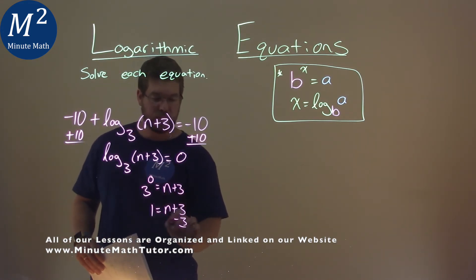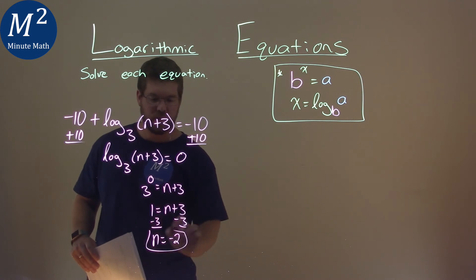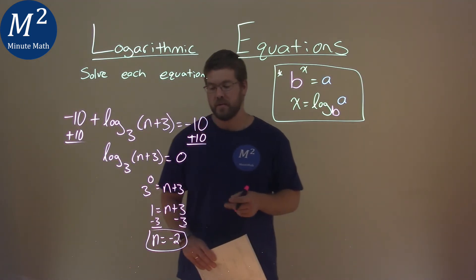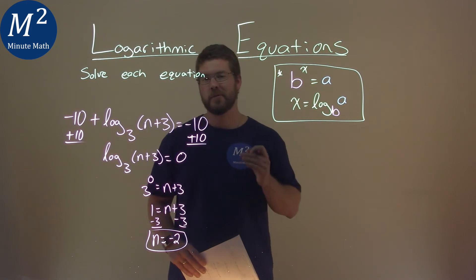From there, we subtract a 3 to both sides, and what do we have? We have n by itself, and 1 minus 3 is negative 2. I kind of flipped it around for you. But either way, our final answer here is n equals negative 2.